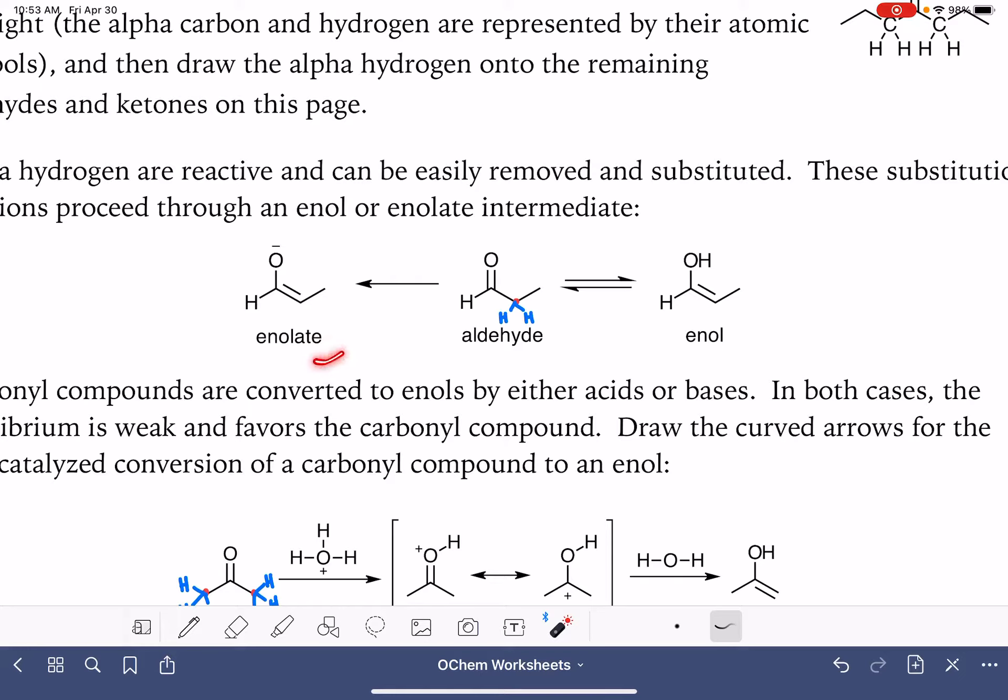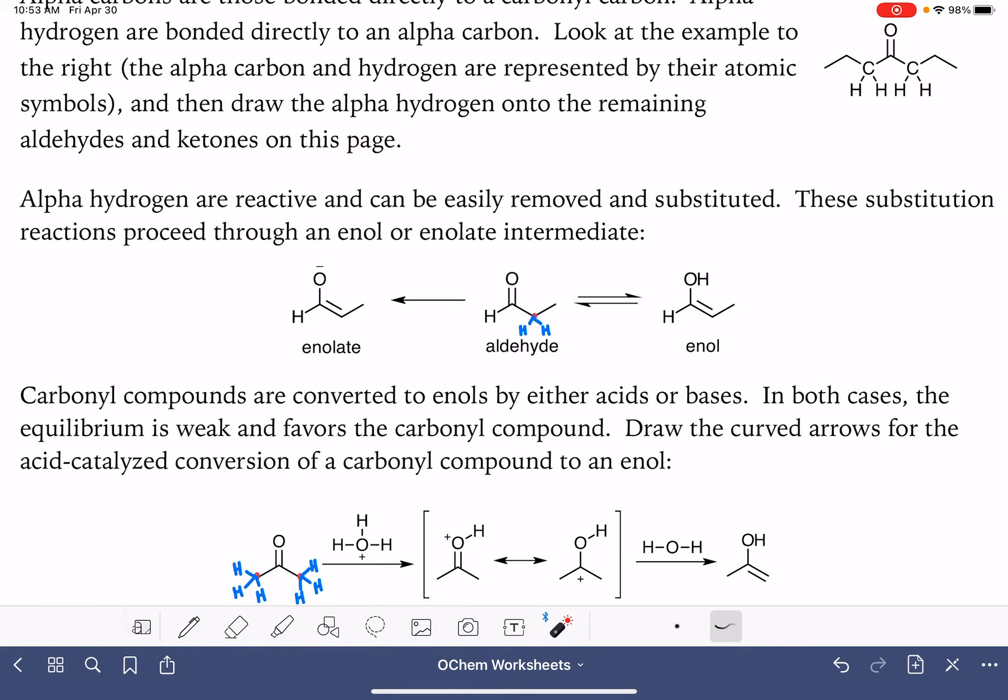Another option that we have is to convert the aldehyde or ketone into what we call an enolate. Notice the relationship between the enol and the enolate. They're almost exactly the same. The enolate has a deprotonated alcohol group. So the enolate is much more reactive because it has that full negative charge on the oxygen atom.